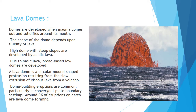Due to basic lava, broad base low domes are also developed. Basic lava means the silica content in the lava is less, so when the lava is basic, a low dome is developed as compared to acidic lava. A lava dome is a circular mound-shaped protrusion resulting from the slow extrusion of viscous lava from a volcano. Dome-building eruptions are common particularly in convergent plate boundary settings. Around 6% of eruptions on the earth are lava dome-forming.